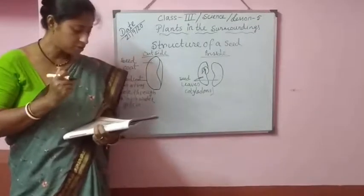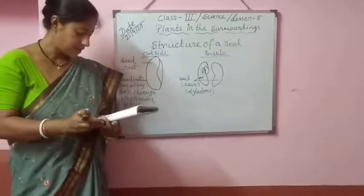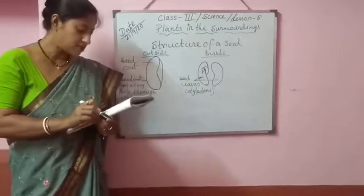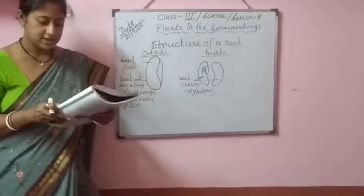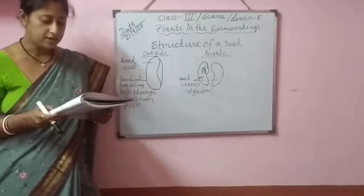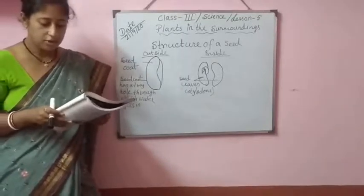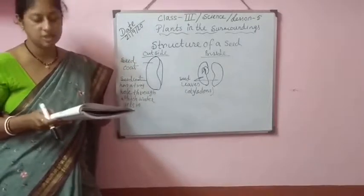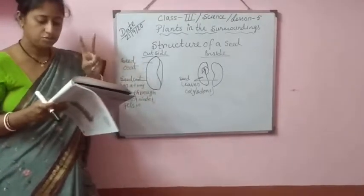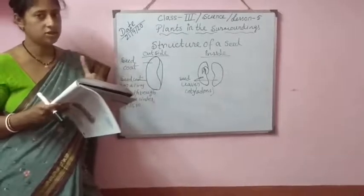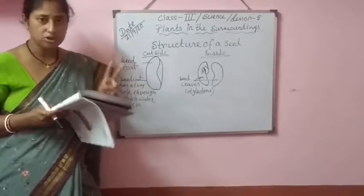Monocot seeds usually produce plants with long and narrow leaves. Dicot seeds contain two cotyledons inside them. Examples of dicot seeds are bean and pulses. Dicot seeds produce plants with different shapes and sizes of leaves. So remember: monocot seeds have one cotyledon, and dicot seeds have two cotyledons.